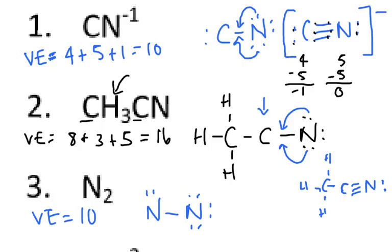One of these nitrogens has an octet. The other doesn't. The other could get an octet by bringing both of those lone pairs in. So you have N triple bond N. And each nitrogen has a lone pair of electrons.